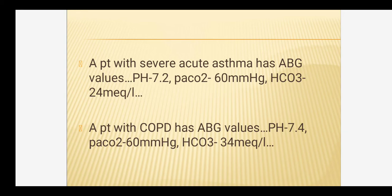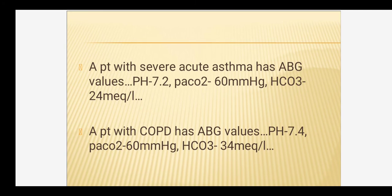Third question: a patient with severe acute asthma has ABG values pH 7.2, PaCO2 60 mmHg, HCO3 24 mEq/L. Try to answer these questions in sequence and give your answers with reasons or rationale. This is all about today's class. I will conclude this topic today. If you have any questions, you can ask. Thank you, students.